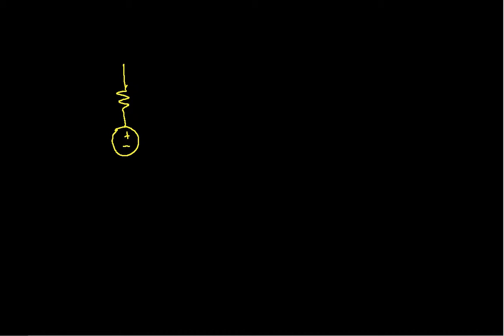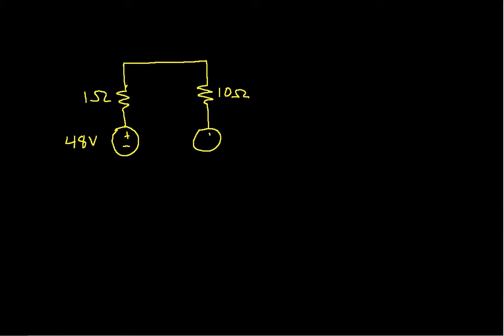Suppose that we have a circuit that looks like this. We'll have a source, and we'll arbitrarily set this at 48 volts. We'll have a resistor, which we'll set at 1 ohm. Over here we'll have another resistor, which we'll set at 10 ohms, and another source, which we'll say is 30 volts.